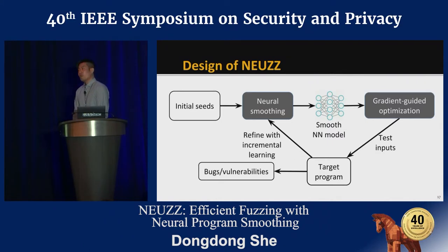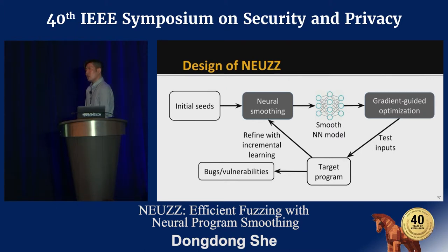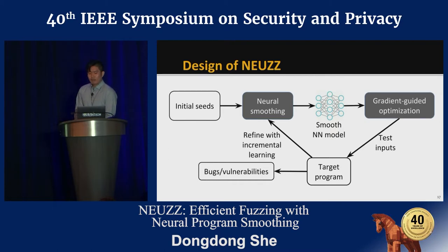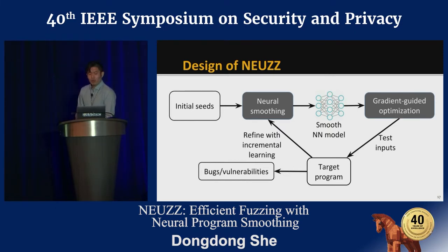Here is the overall design of NOOS. NOOS starts with a set of seed corpora as initial training data, then uses a neural network model to learn a smooth surrogate of the target program. After training, NOOS computes the gradient of edges with respect to inputs and performs efficient gradient-guided mutations. We keep the mutated inputs that cover new edges and add them into our training dataset. Since the initial dataset only covers partial program space, we keep refining our neural network model with incremental learning.